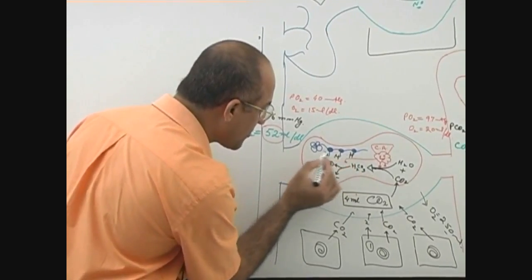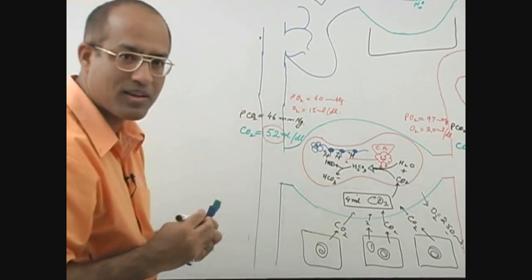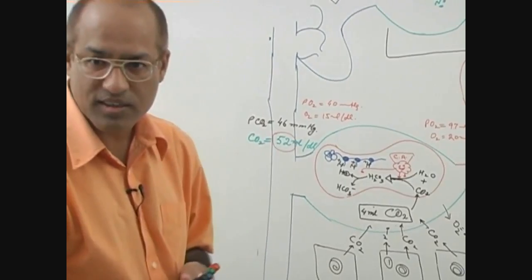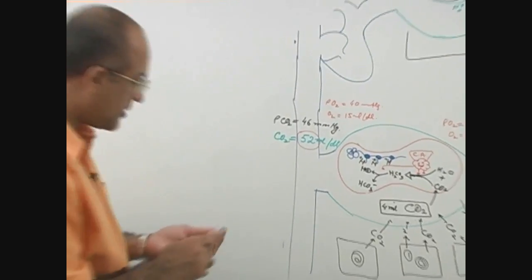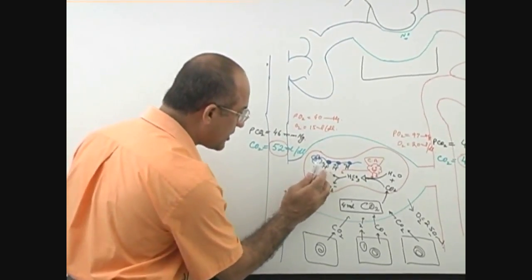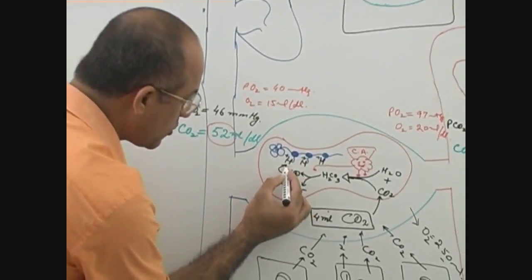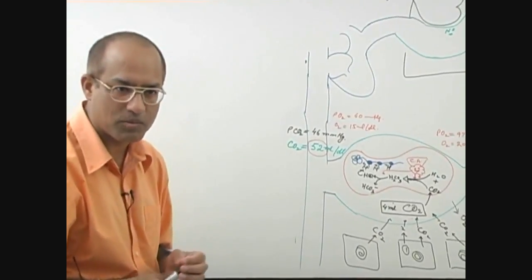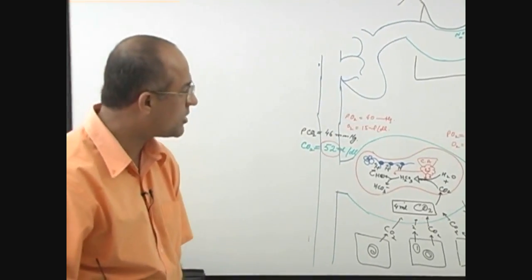Protons get hooked with this. Now, are these protons free or they are bound? Bound. Are they now free to change significantly any pH? No. So in this way, this highly dangerous reactive proton is associated with the hemoglobin, captured by the hemoglobin. And now we are left with bicarbonate.